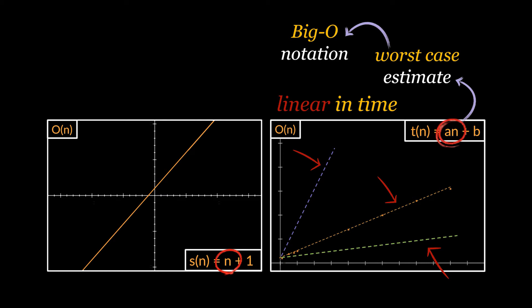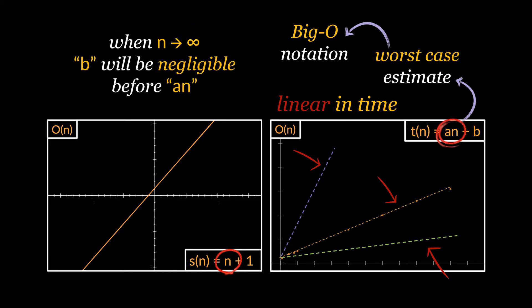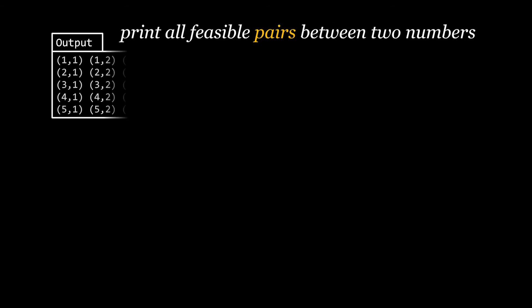The same applies for time complexity, which is O(n) as n to the power 1 is the highest order in the equation. We do this because if n grows infinitely — the worst case — the smaller orders will be negligible before the higher order values, and it will be enough to represent them using just the highest order, in our case n.